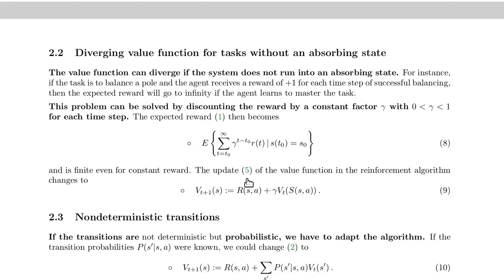If you have an environment with no absorbing state, the agent will never finish. The reward will add up to infinity — for example, a reward of -1 per step goes to minus infinity, or a reward of +1 per successful step gives plus infinity as the expected reward.